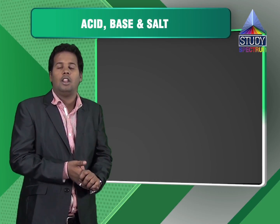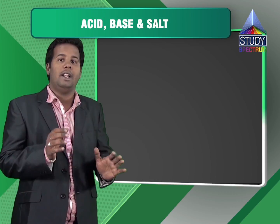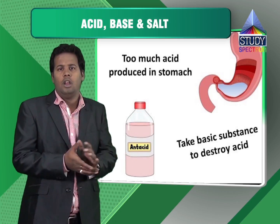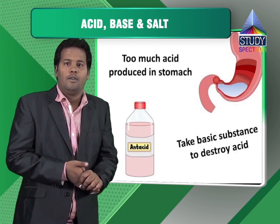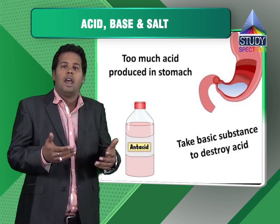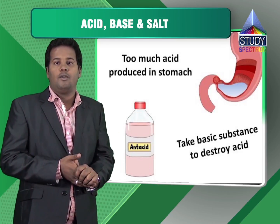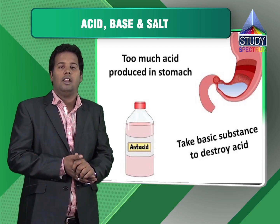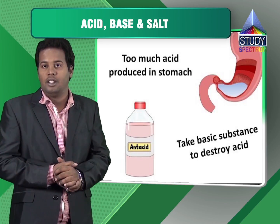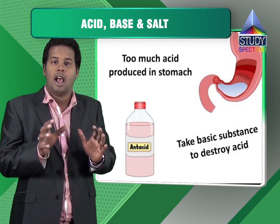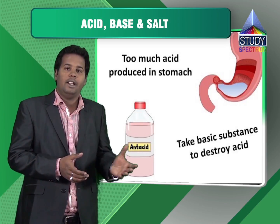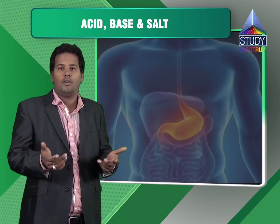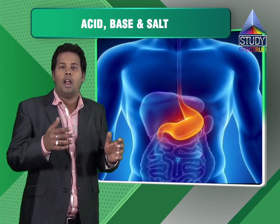Now we will talk about neutralization reactions in our everyday life. The very first and one of the best examples is indigestion. Our stomach has the ability to produce dilute HCl for digestion, but if the stomach produces an excess amount of dilute HCl, it leads to pain and irritation — that is what we call acidity. In indigestion, excess HCl is produced, creating that pain and irritation.